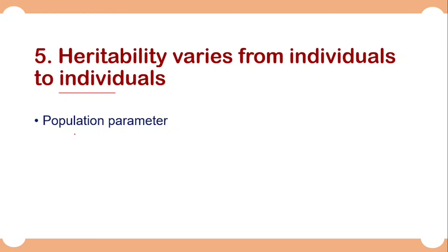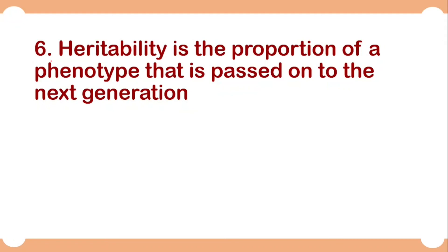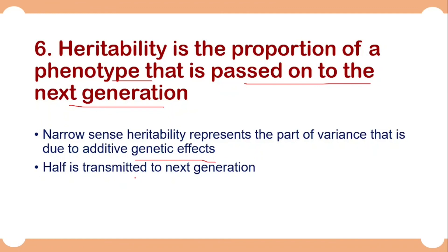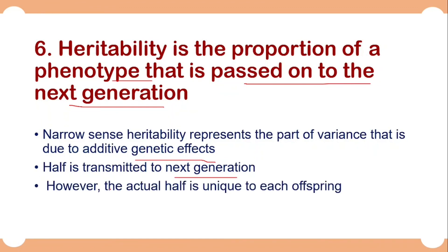The last misconception about heritability is that it is the proportion of the phenotype that is passed on to the next generation. No — heritability tells us about the part of variance that is due to genetic differences. In terms of narrow-sense heritability we get the part of variance due to additive genetic differences, but still only half of the genetic effect is transmitted to the next generation. Furthermore, we don't know what the actual half will be transmitted to each offspring, as it is unique to each offspring. So heritability doesn't tell us about the proportion of phenotype that will be passed to the next generation.